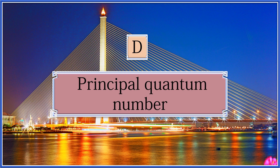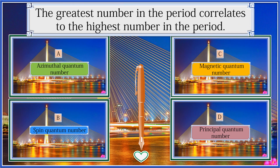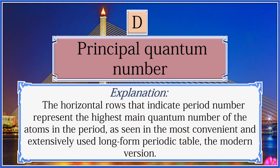The answer is principal quantum number. The horizontal rows that indicate the period number represent the highest main quantum number of the atoms in that period, as seen in the most convenient and extensively used long-form periodic table, the modern version.